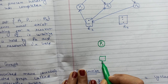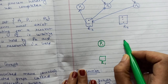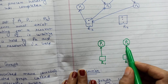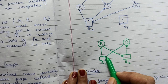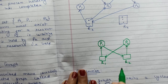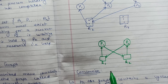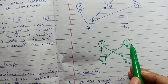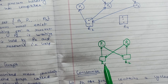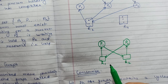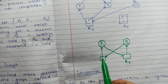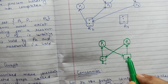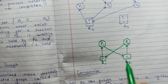For example: resource R1 is assigned to P1, R2 is assigned to P2, P1 is requesting R2, and P2 is requesting R1 — this is a deadlock situation. In a resource allocation graph, circular vertices represent processes and rectangles represent resources. Multiple instances of a resource are denoted by dots inside the rectangle. If R1 has one instance it shows one dot; if R2 has two instances it shows two dots.